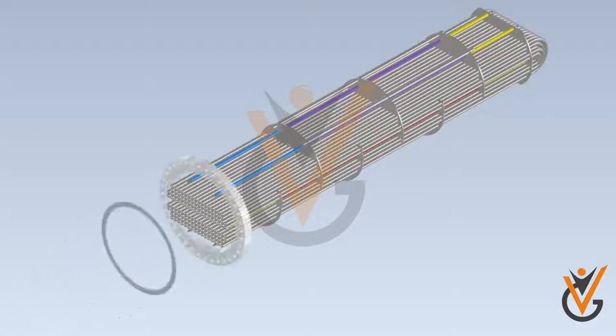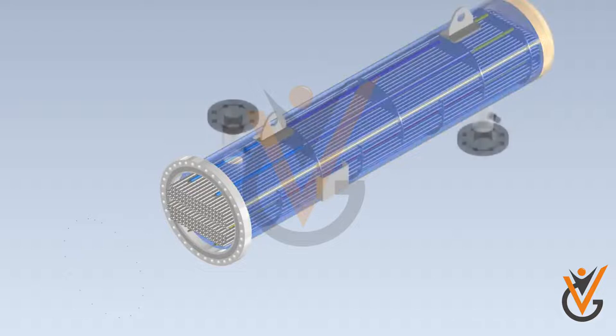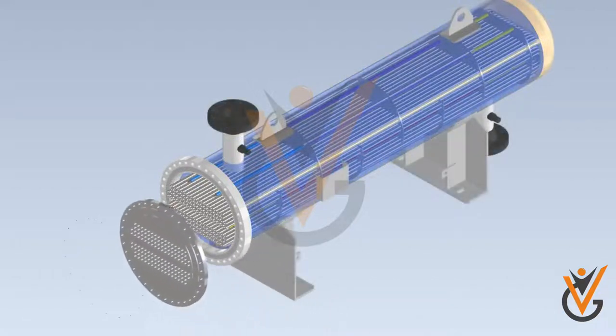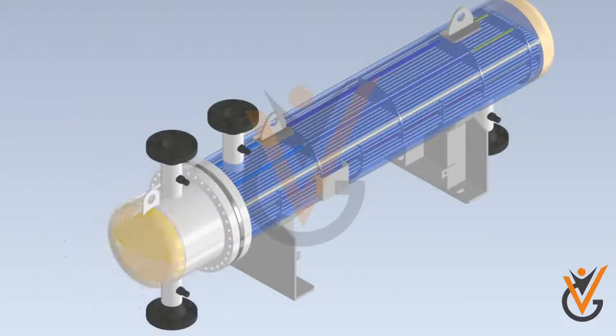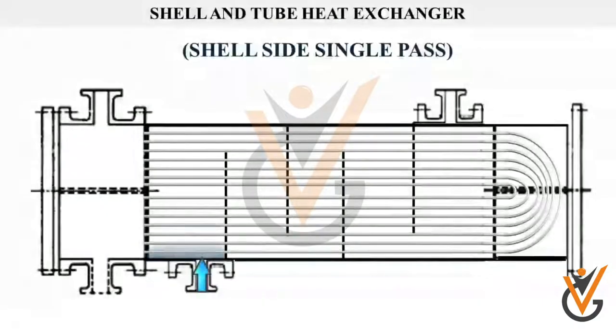Design of the tube bundle is such that all the entry sides of the tubes are connected to a common header, and similarly all the exit sides of the tubes form another common header.